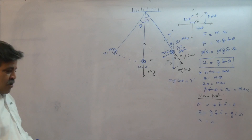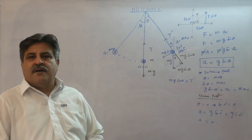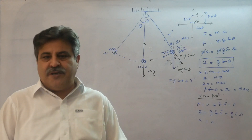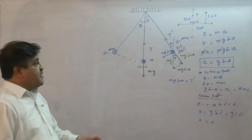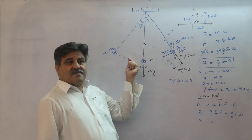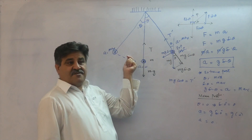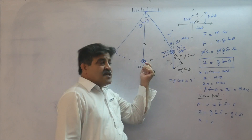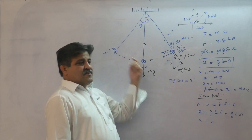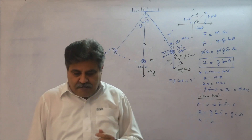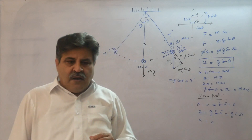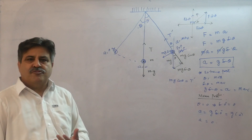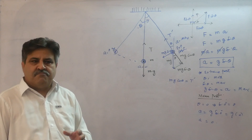Now we are going to prove that the direction of acceleration must be towards the mean position. If the body goes in one direction, the direction of acceleration must be opposite - towards the mean position. There is no evidence in your book; what I will teach you is only with our basic concepts.